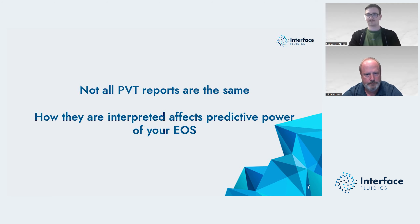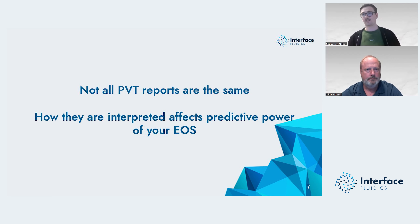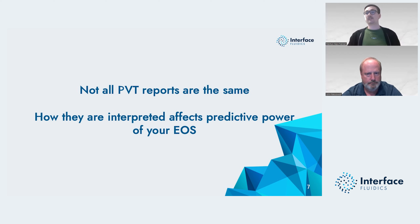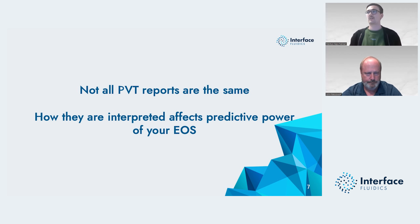Not all PVT reports are the same, and how they're interpreted affects the predictive power of your equation of state. One of the things we get asked about all the time is: why don't you just have a standard PVT report? Different labs do things in different ways and report differently, even within the same lab. Different vintages of individual labs will be different because the technology changes. Throughout all of these different practices, you will basically end up getting different types of results depending on the lab, the vintage, and the location. Since I'm trying to make a model based on that PVT data, having data from different labs and vintages will have an impact on the model I end up with.